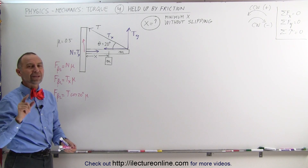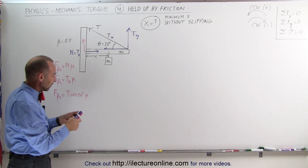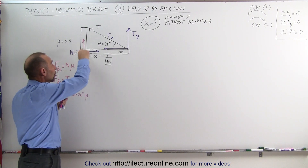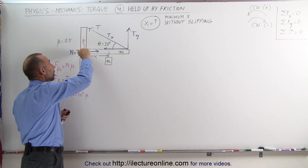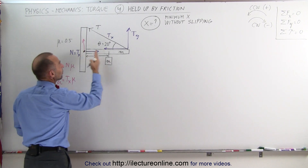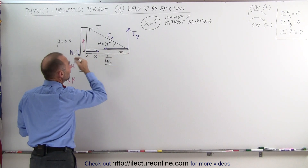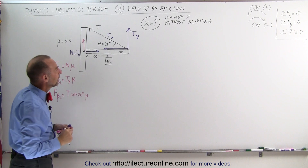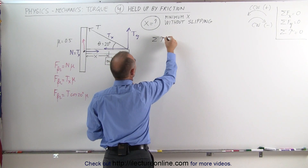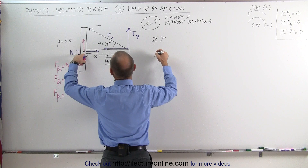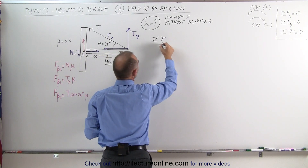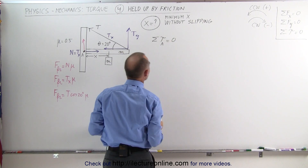Since we don't know what's happening at the post end, we'll call that the pivot point A. The length of the beam is L, which will cancel out later. Using the principle that the sum of all torques about pivot point A must equal zero, we now identify all the torques and set their sum to zero.